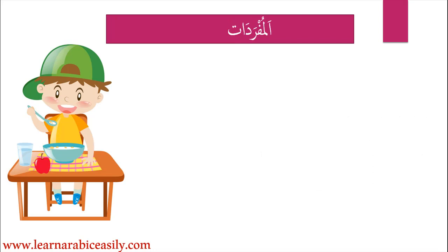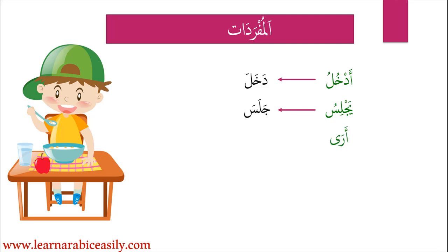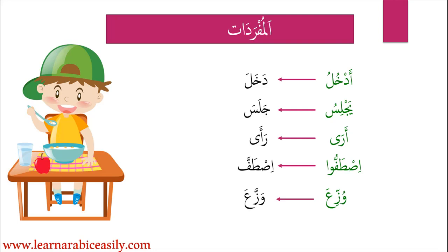Now let's look at the مفردات, the vocabulary. أدخل means 'I enter' or 'I am entering,' from the verb دَخَلَ (he entered). يَجلِسُ means 'he is sitting' or 'he sits,' from the verb جَلَسَ. أرى means 'I see,' from the verb رَأَى. اصطفوا means 'they lined up' (plural), from the verb اصطف (singular). وَزَّعَ means 'he distributed'; وُزِّعَ is the passive form meaning 'it has been distributed.'